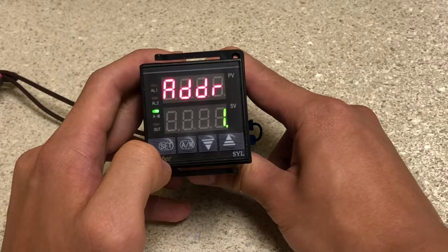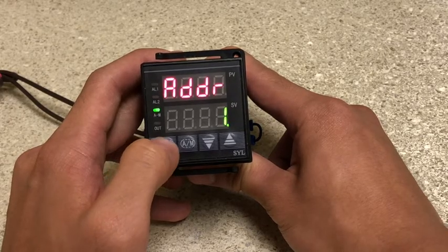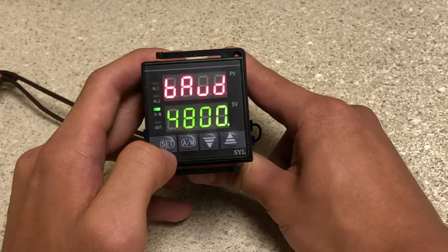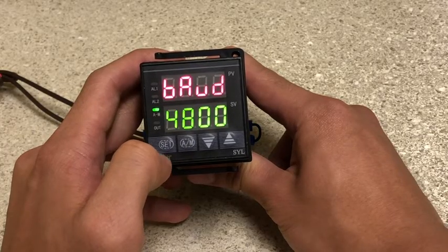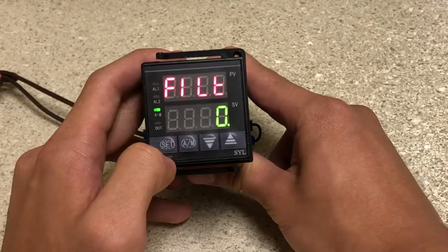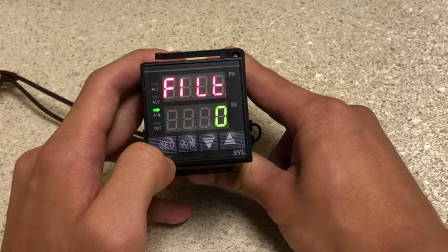ADDR is the communication address. Please do not change this. BAUD is the communication baud rate. Please do not change this. FILT is the PV input filter.